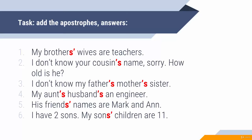'I don't know my father's mother's sister.' I have one father, he has one mother, so the apostrophes are before S. 'My aunt's husband's an engineer.' The meaning of the sentence is: the husband of my aunt is an engineer, which means that the second apostrophe means 'is.' 'My aunt's husband is an engineer,' and because 'husband' is singular, you need the apostrophe before S.